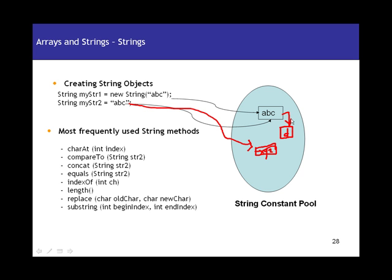There are also string buffers. String buffers differ from strings — they are created on the heap and no objects are created in the string constant pool when using string buffers. You use string buffers mostly when you have a large amount of string data to assign or when you are doing a lot of concatenation operations.